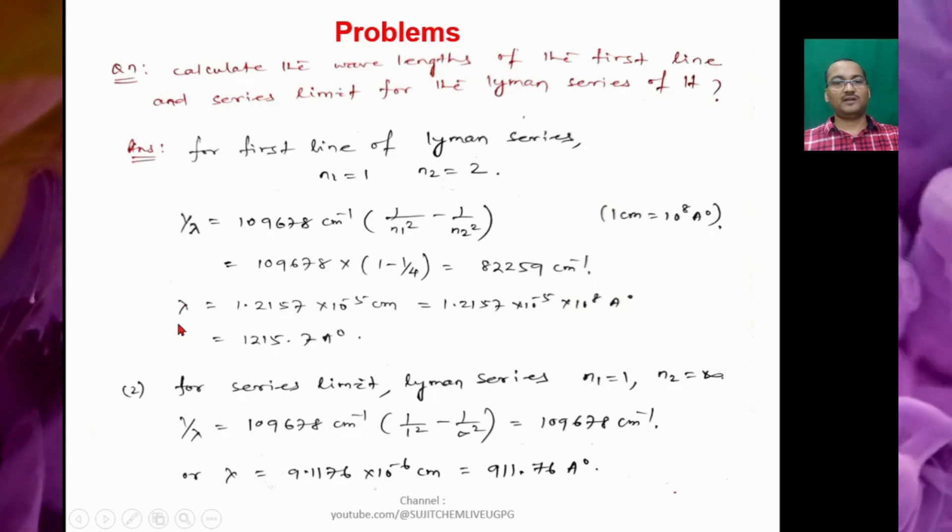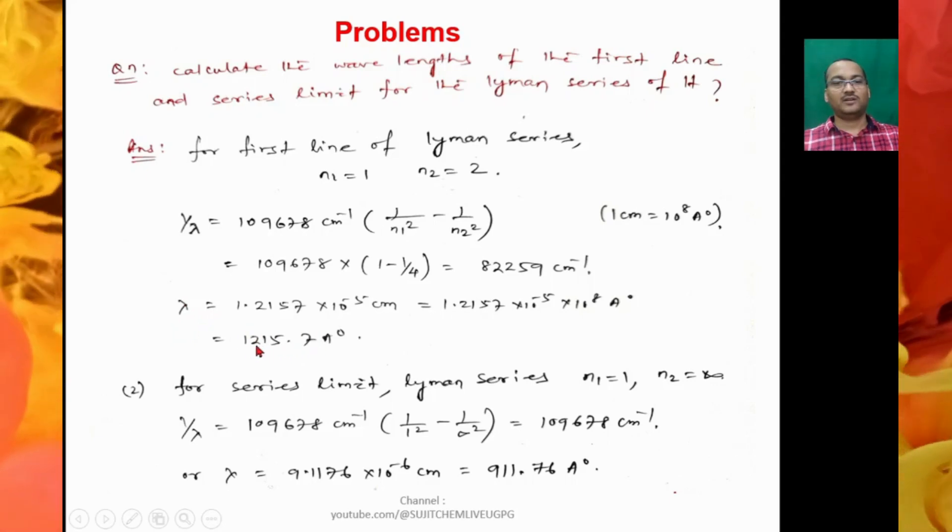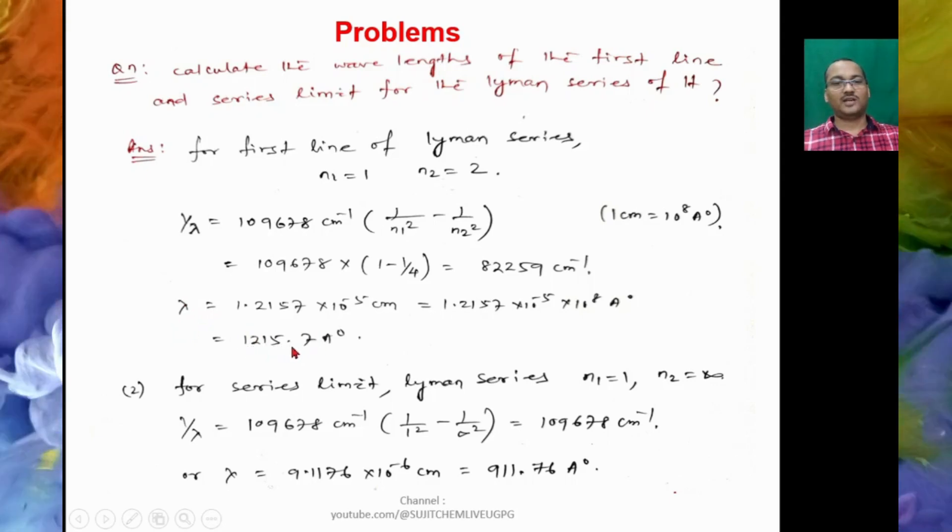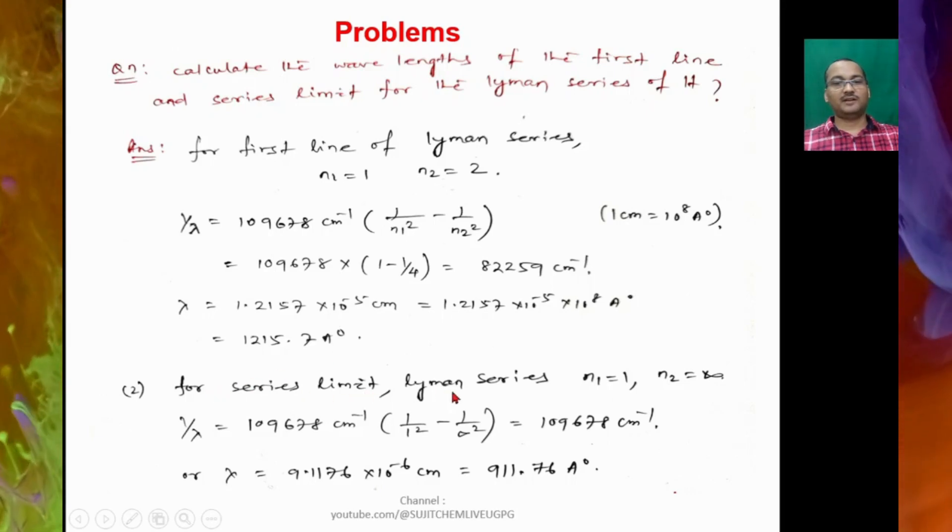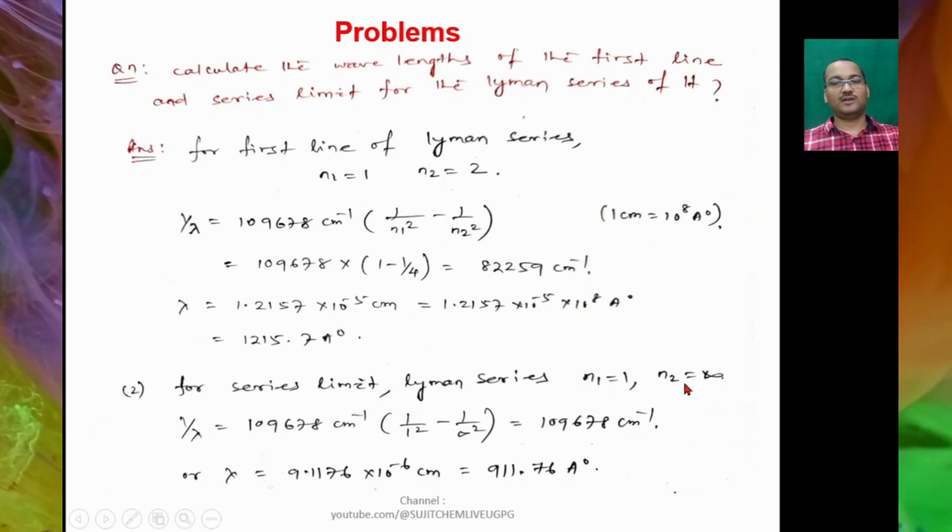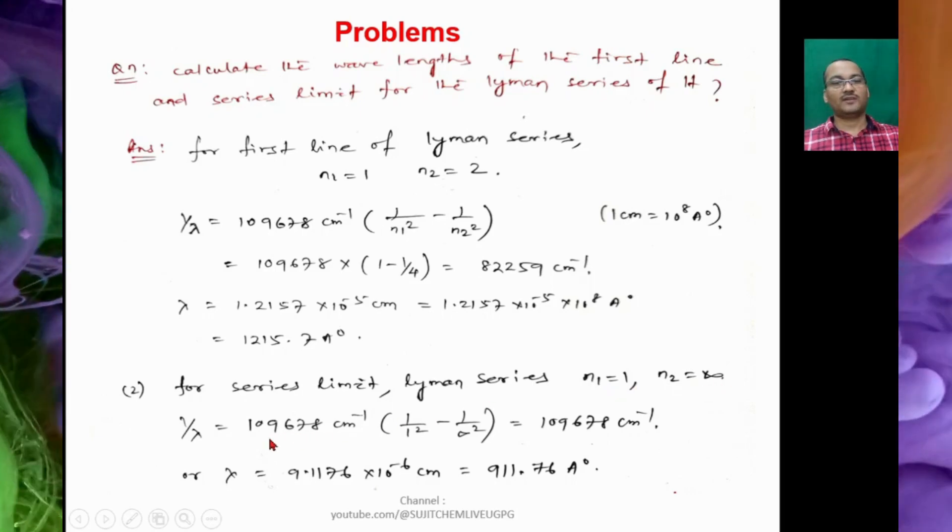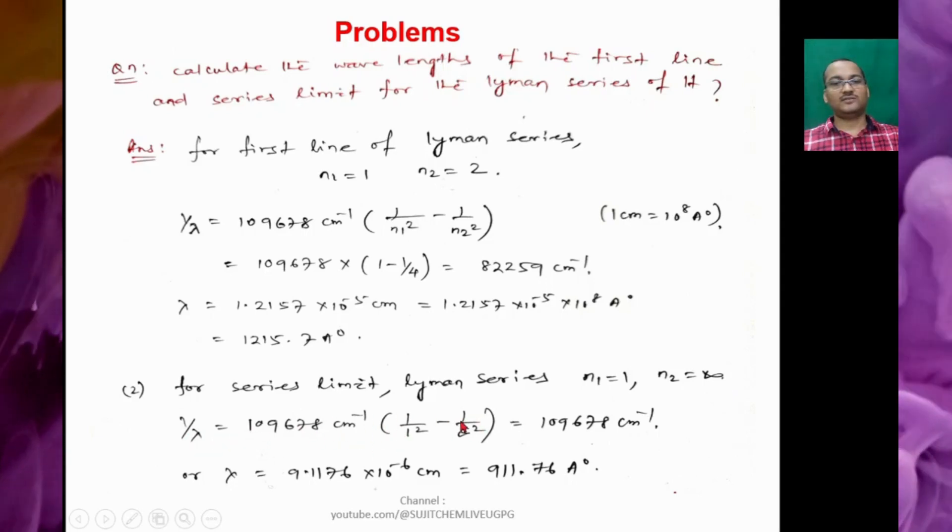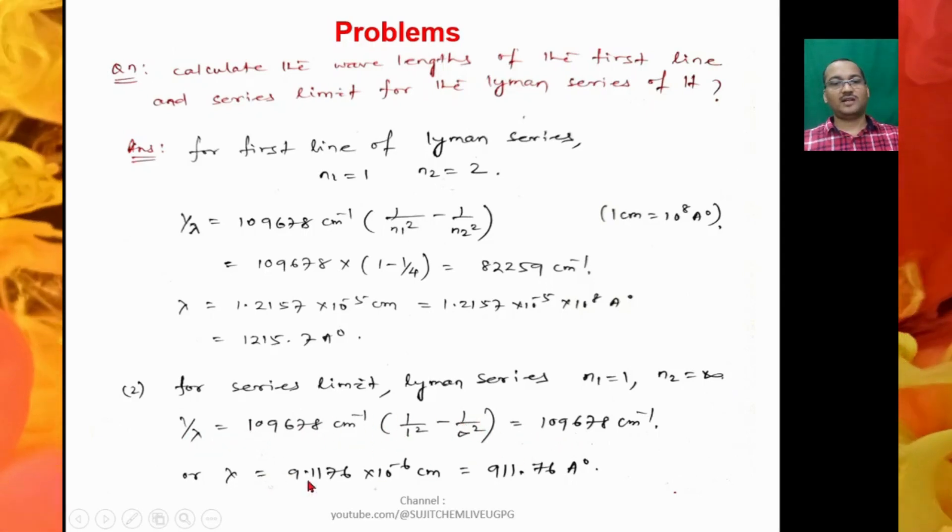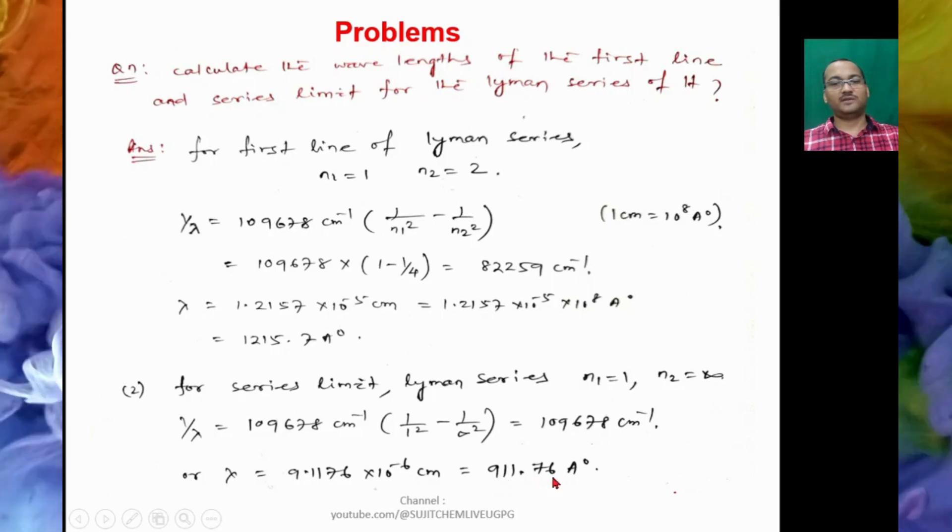So we can find λ, so that is found to be 1215.7 angstroms. So for series limit Lyman series, N₁ = 1 and N₂ will be infinity. So now 1/λ, putting these values, we can find out λ = 911.76 angstroms.